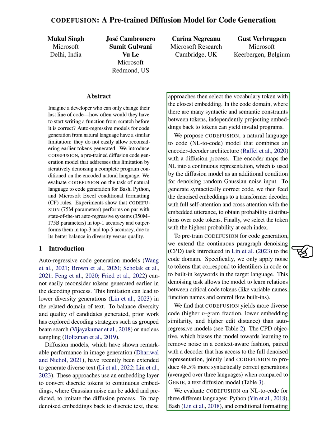To generate syntactically correct code, we feed the denoised embeddings to a decoder. This decoder uses full self-attention and cross-attention with the embedded utterance to obtain probability distributions over code tokens.